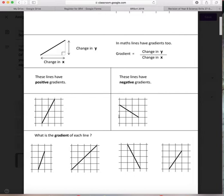Here it's going down by two for every three across. So it's minus two divided by three, minus two thirds.